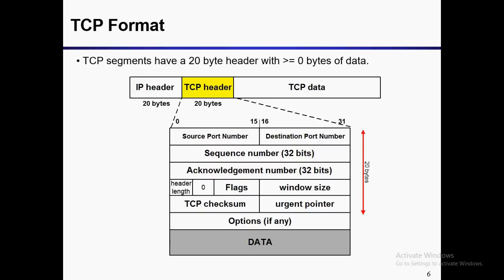Window size is the maximum limit of bytes that a receiver can accept at that particular moment. TCP checksum covers both the TCP header and TCP data. If the checksum is invalid, it means the data or the header is invalid, and TCP rejects the packet.